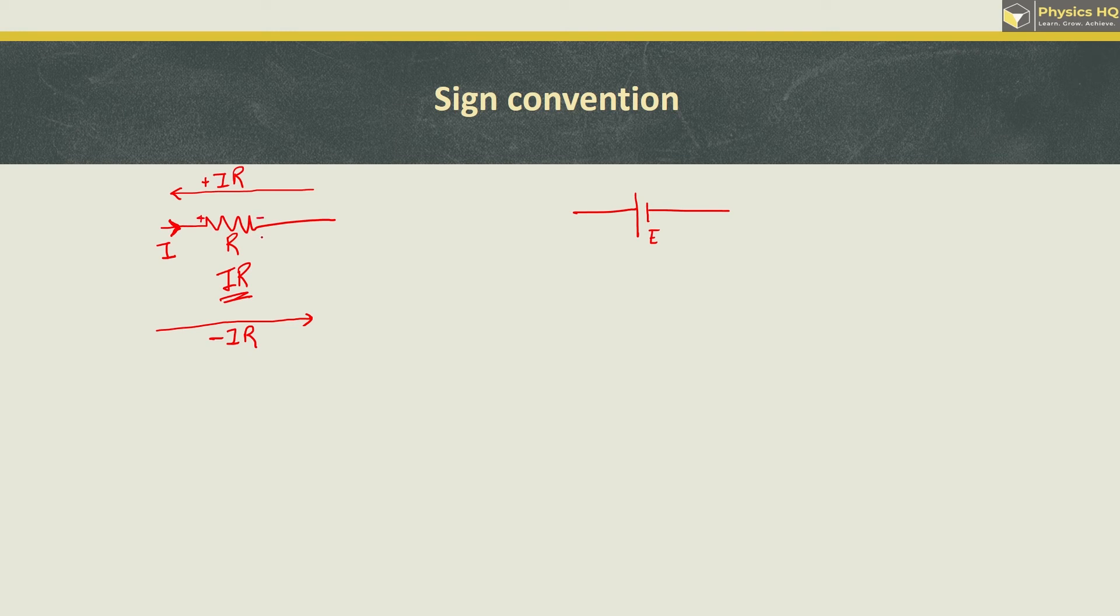You have to remember one simple thing: always look for the second sign. When we go left to right, the second sign is minus, so it's minus IR. When you go right to left, the second sign is plus, so it's plus IR. I hope it is clear.